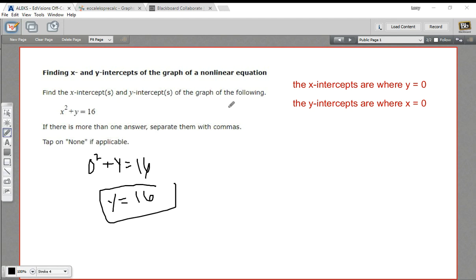If I do the same thing for the x-intercepts, I put in 0 for y, I would get x squared equals 16. And then I just take the square root of both sides, and I get x equals, remember plus or minus when you take the square root, 4.